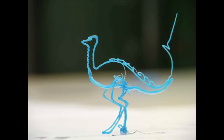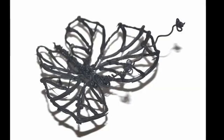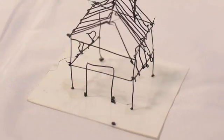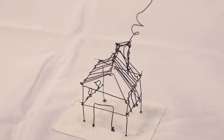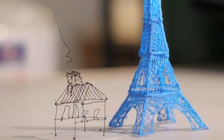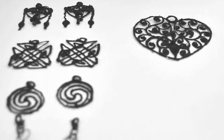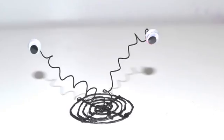So how does it work? 3Doodler uses cutting-edge patent-pending technology to heat and cool plastic as it passes through the body of the pen. Just like a 3D printer, the plastic cools rapidly and becomes hard.